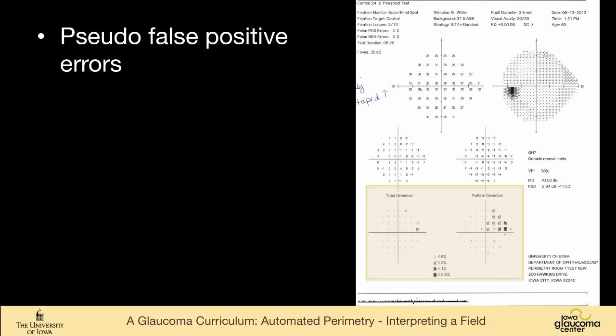Having said that, I don't want you to throw away every field in which there is a disconnect like this because occasionally, and to me it's a very small percentage of the time, you can have somebody who has real disease who has this same disconnect between total deviation and pattern deviation. And these are the people whose vision is extraordinarily good. People who have 20/10 vision, if they have a defect in their visual field, it still may be normal for age, but it's just abnormal for them.